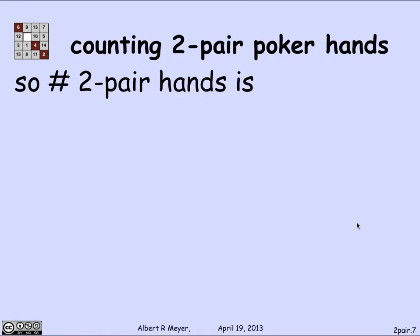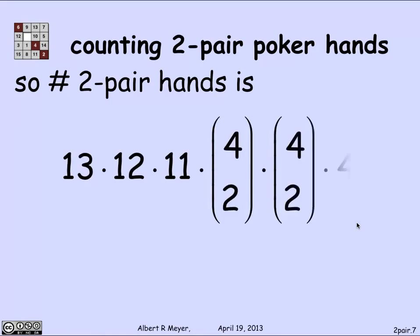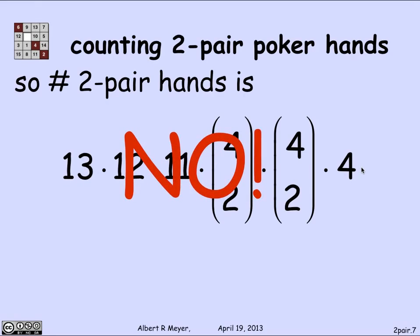So I can count the number of two-pair hands: 13 choices for the rank of the first pair, 12 for the second, 11 for the third card's rank, four-choose-two for the suits of the first pair, four-choose-two for the second pair's suits, and four for the last card's suit. The total is 13 × 12 × 11 × C(4,2) × C(4,2) × 4 — but that's not right. There's a bug.